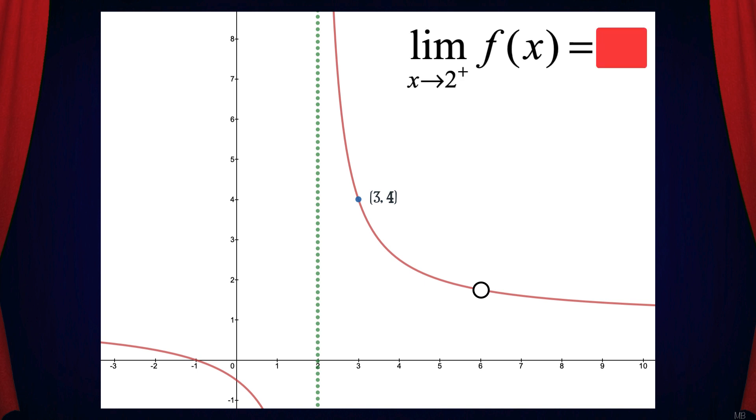How about this one? What's the limit of f of x as x approaches 2 from the right? The answer is positive infinity. As x approaches 2 from the right, the graph approaches a vertical asymptote.